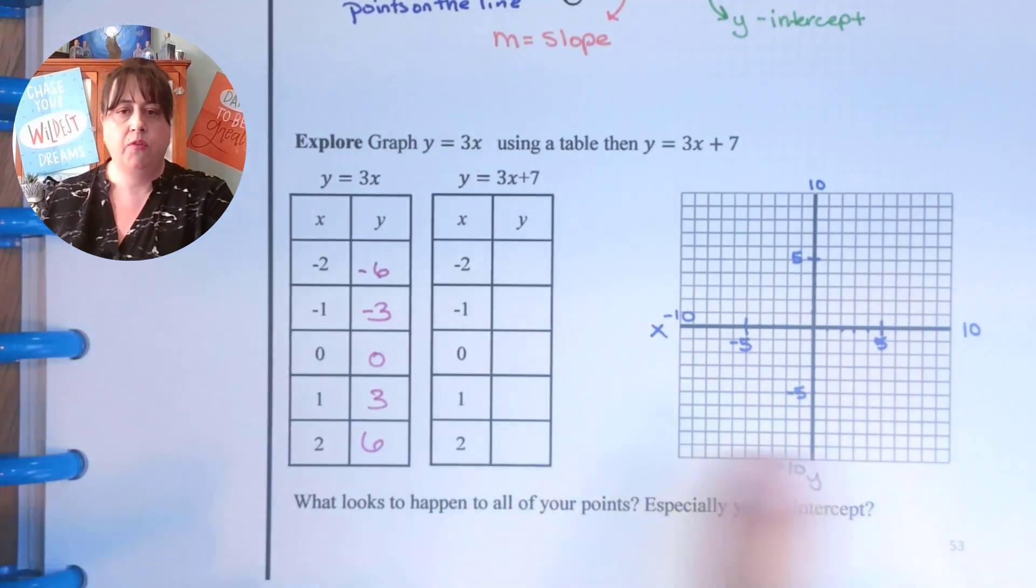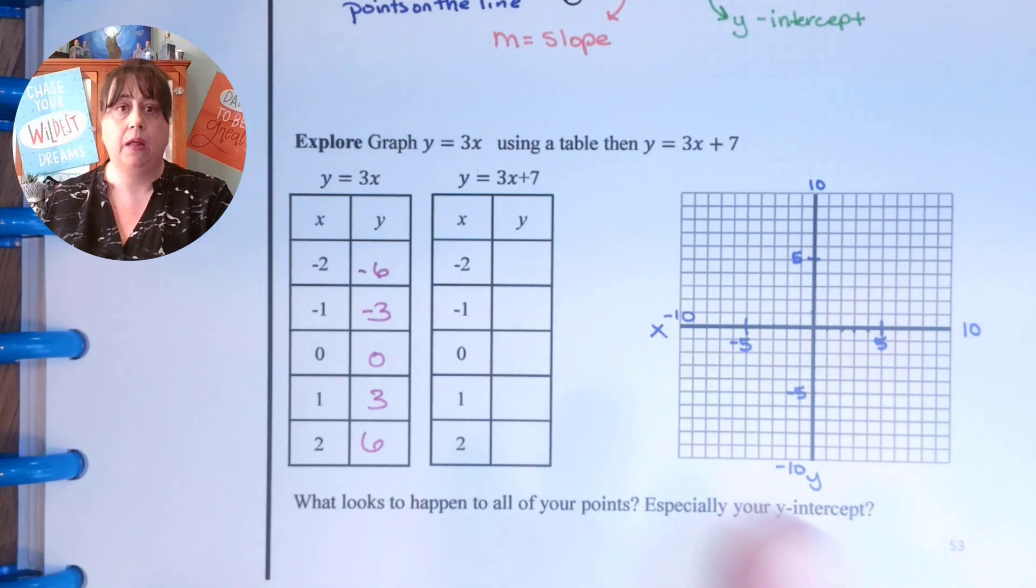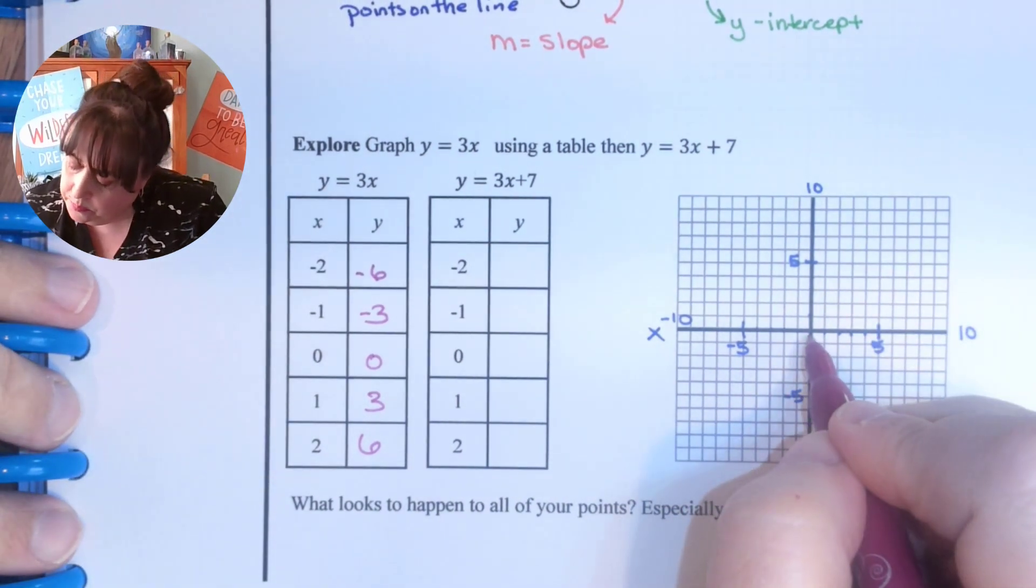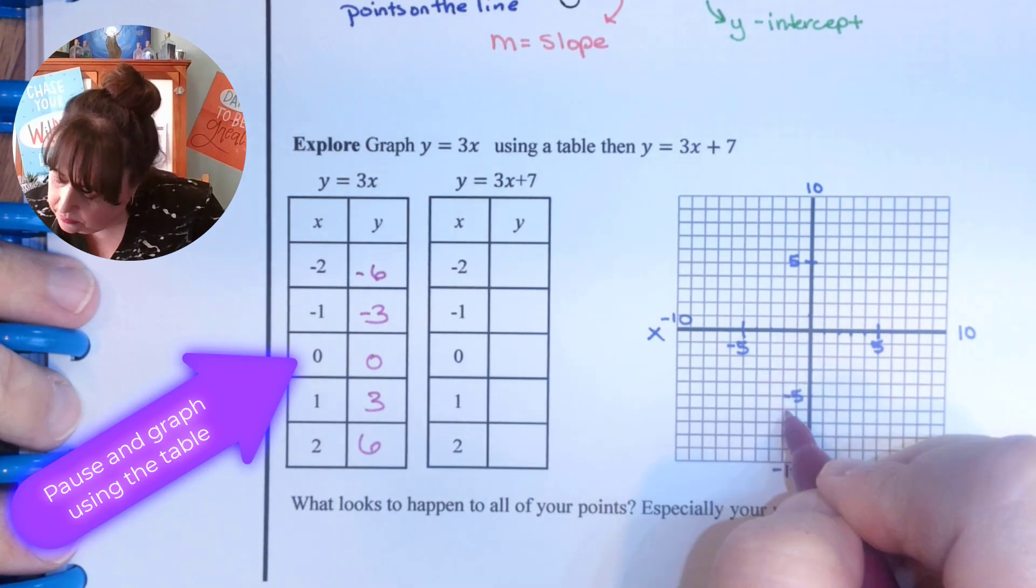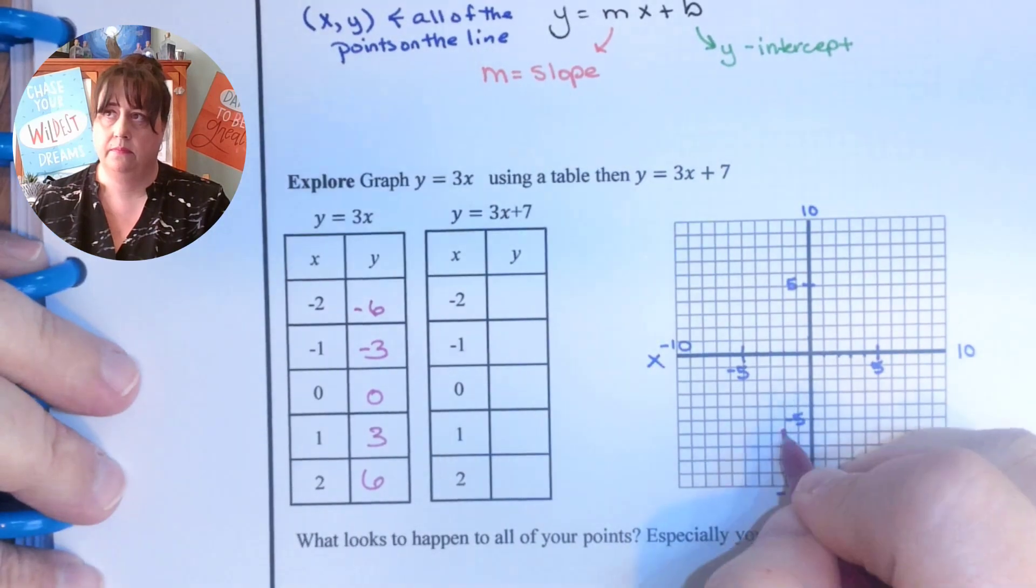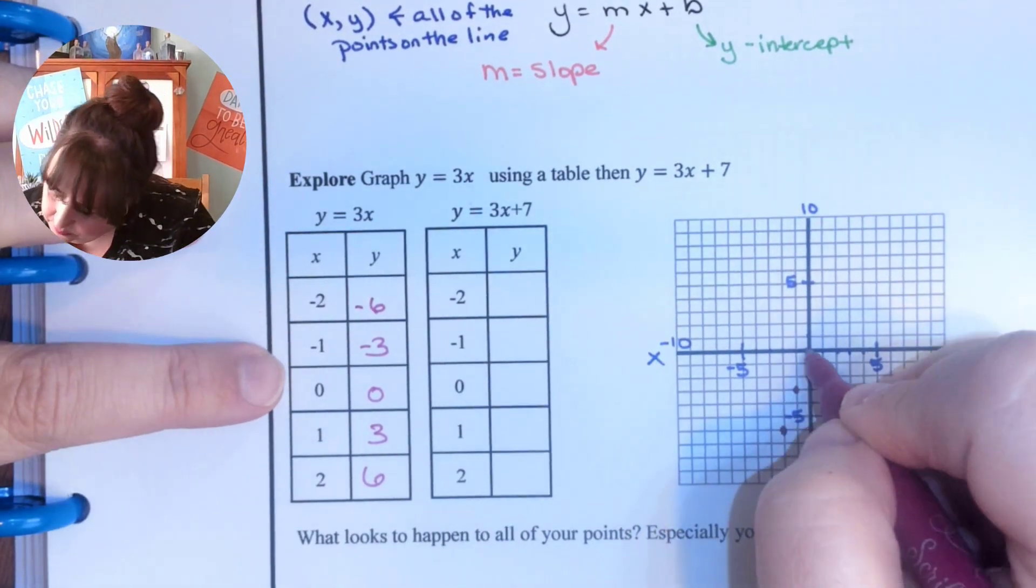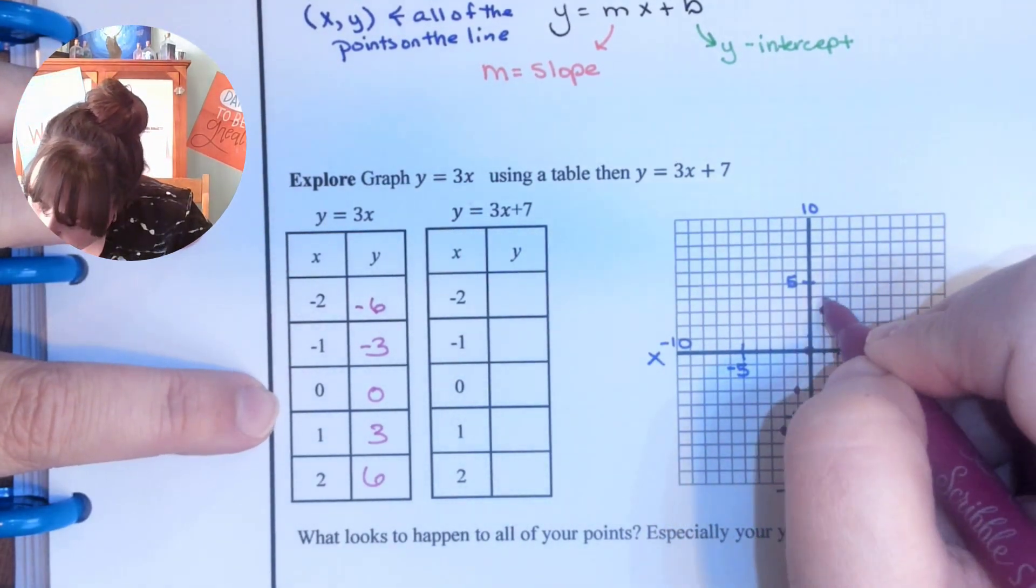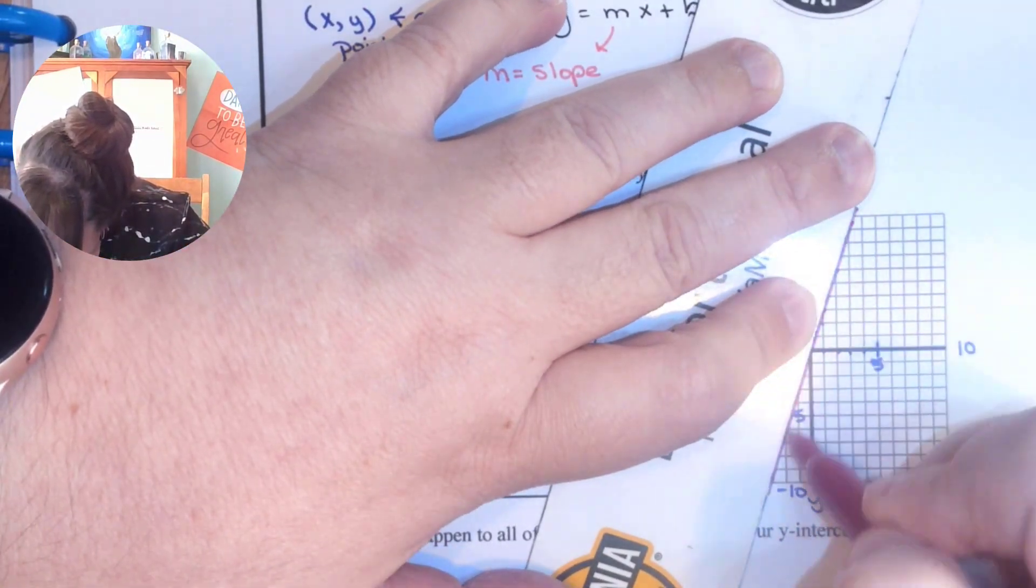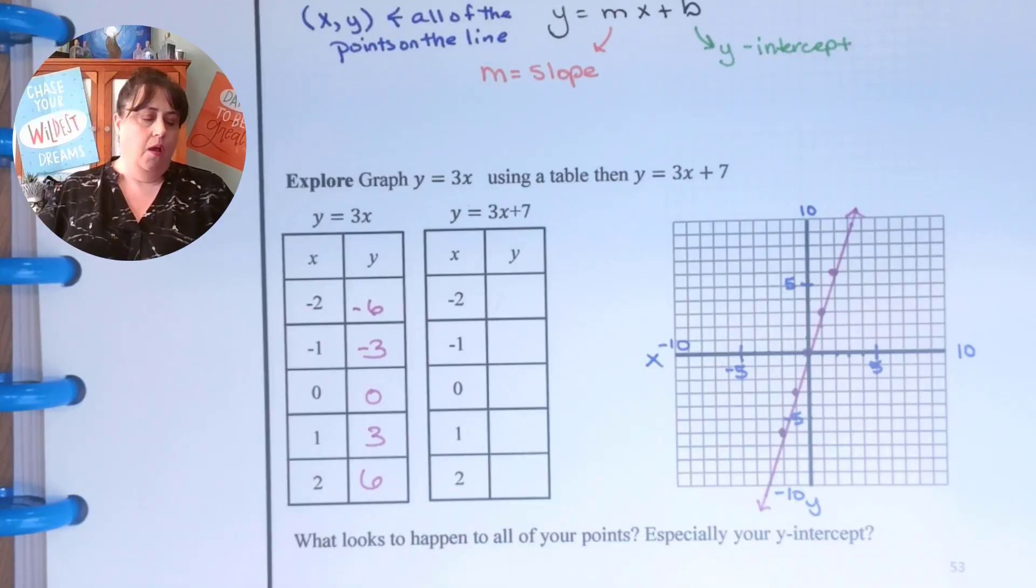So I want to graph those points. I've already set up my coordinate plane along with my scale. So negative 2, negative 6. So go ahead and do that and then come back. Okay.